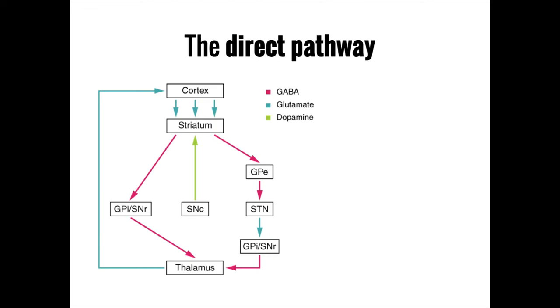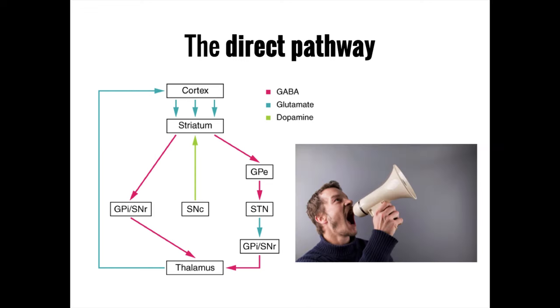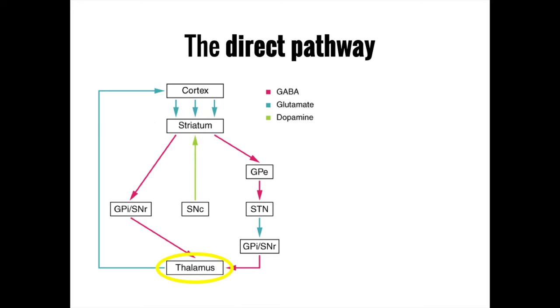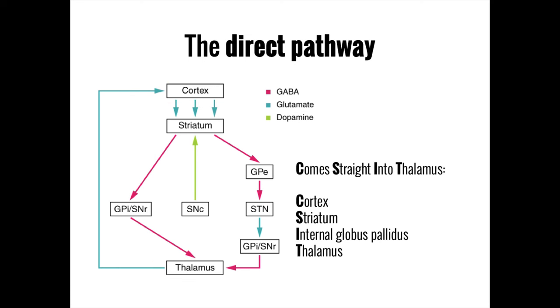The specific way that the basal ganglia modifies movement depends largely on whether it goes through the direct pathway or the indirect pathway. The direct pathway is the more straightforward of the two and generally has an amplifying or excitatory effect on the initial motor signal. For example, if we are not petting the dog hard enough and need to pet it harder. The direct pathway travels from the cortex to the striatum into the internal globus pallidus and finally to the thalamus, which sends the signal back to the cortex for further refining. You can remember this sequence by thinking that the direct pathway comes straight into the thalamus.